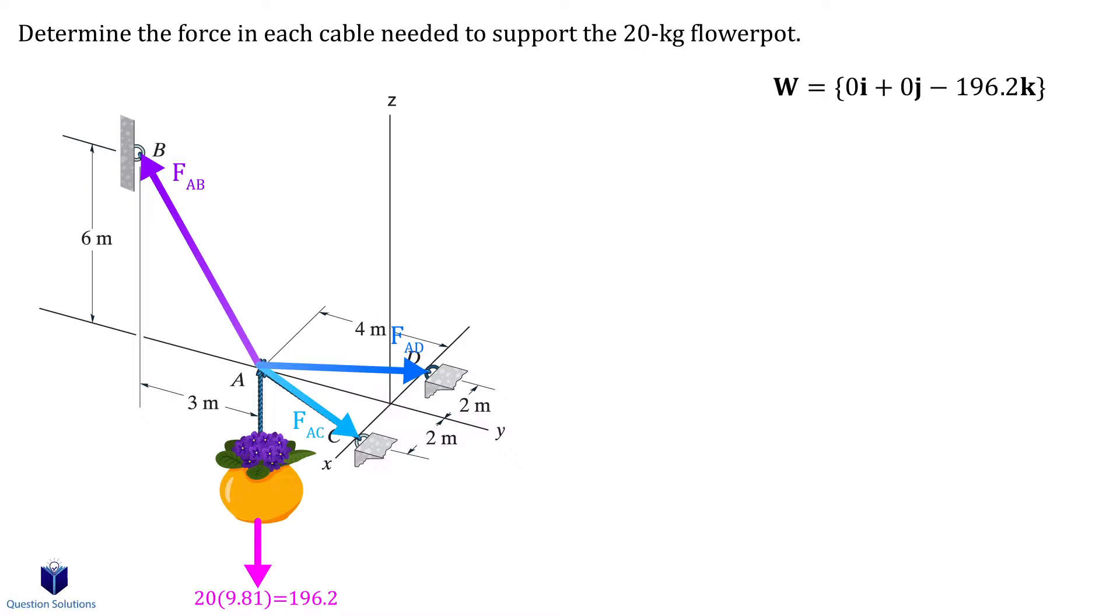The weight is easy, it's straight down along the z-axis, so it'll just have a k component which is mass times the acceleration due to gravity. Now for the other cables we need three position vectors for each of them. So let's write down the locations of interest. Now that we have all the points we can write our position vectors.